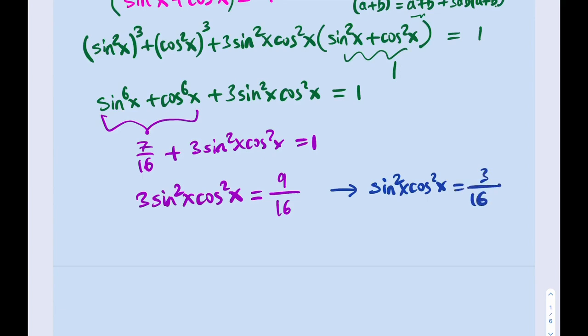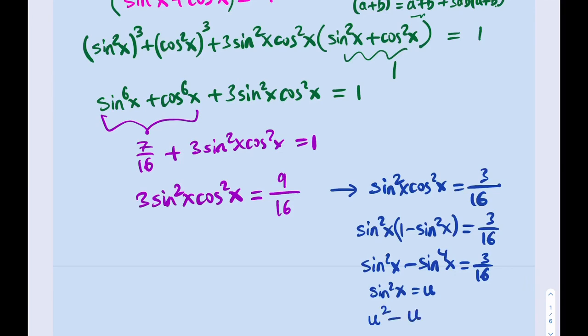Then what I can do is turn cosine squared into sine squared. I can replace cos²x with 1 - sin²x. Then distribute this, and I'll be getting sin²x - sin⁴x. We got a quartic, but don't worry, it's going to simplify. Put everything on the same side and call sin²x equal to u. Then you would be getting u² - u + 3/16 = 0.